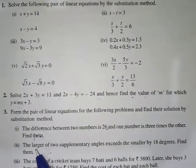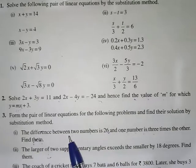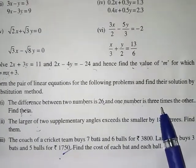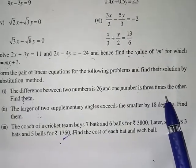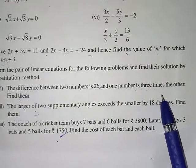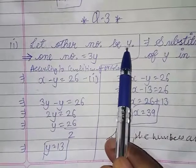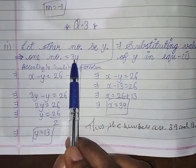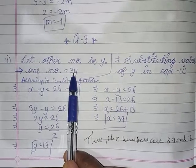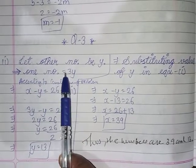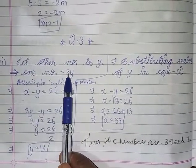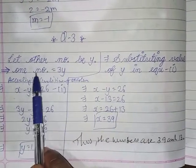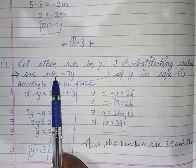Question 3. The difference between the two numbers is 26. One number is three times the other number. Find them. Let the other number be y. So one number will be three times y, meaning three y.